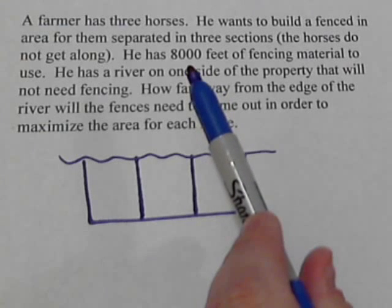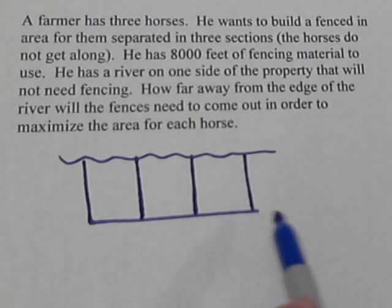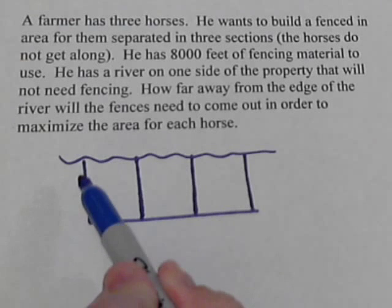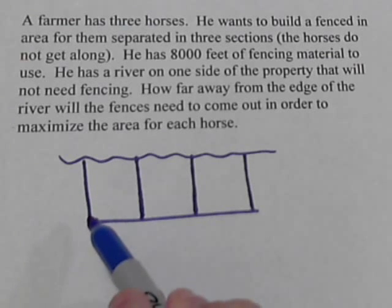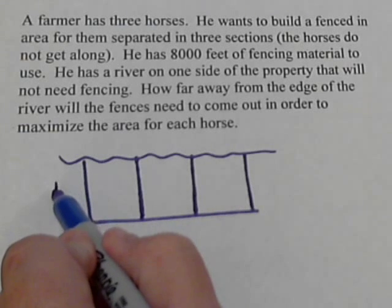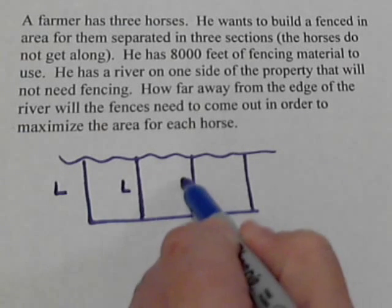We know we've got 8,000 feet of fencing so let's start labeling this. The question asks how long is this section here? How far do we come out from the river? And we're going to assume that all these are the same length. So all of these we'll call L for length.